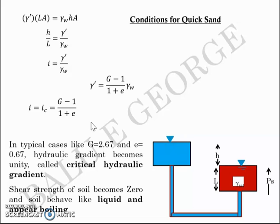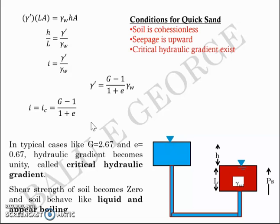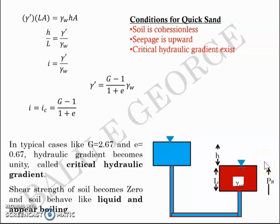The conditions under which quicksand can be expected are: first, the soil should be cohesionless — pure sand with no cohesive force; second, the seepage pressure PS should be upward, not downward (downward flow increases effective stress); and third, the critical hydraulic gradient must exist. When these three conditions are met, quicksand condition can be expected.